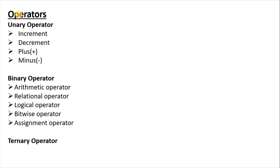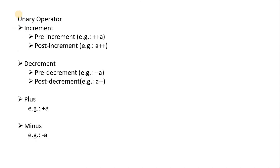As the name clarifies, unary operators are operators which use a single operand. Similarly, binary operators are operators which use two operands. And ternary operators are operators which use three operands. In the unary operator we have the increment operator, decrement operator, plus and minus. For increment, we have pre-increment and post-increment. For decrement, it is also categorized as pre-decrement and post-decrement.